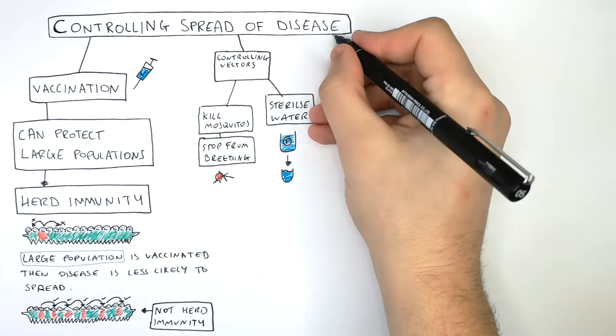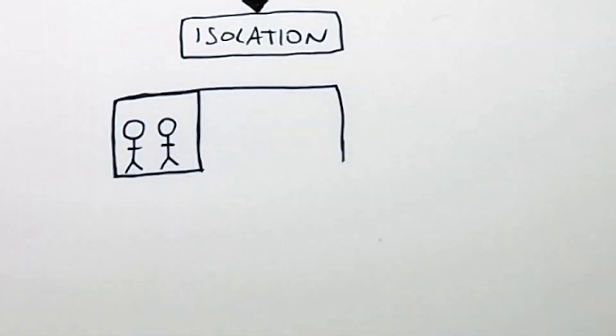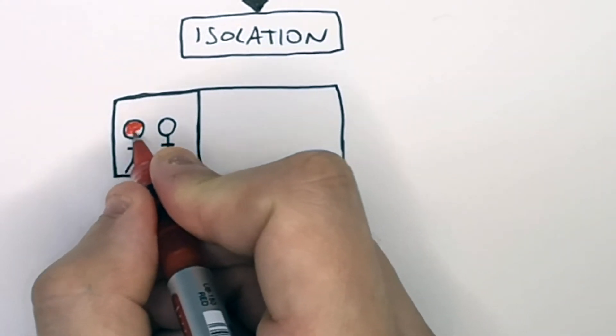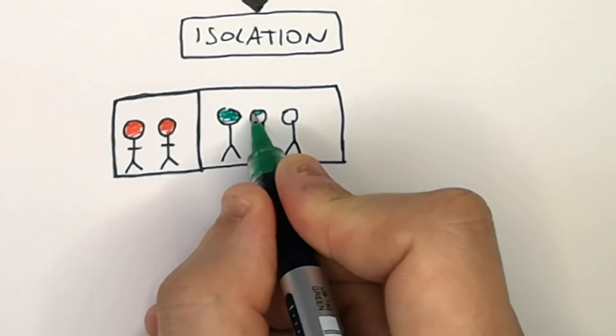Another way of controlling the spread of disease is by isolation. The isolation of the hosts who are carrying the disease. So the people in red have the disease, and we have isolated them away from the healthy population without the disease.